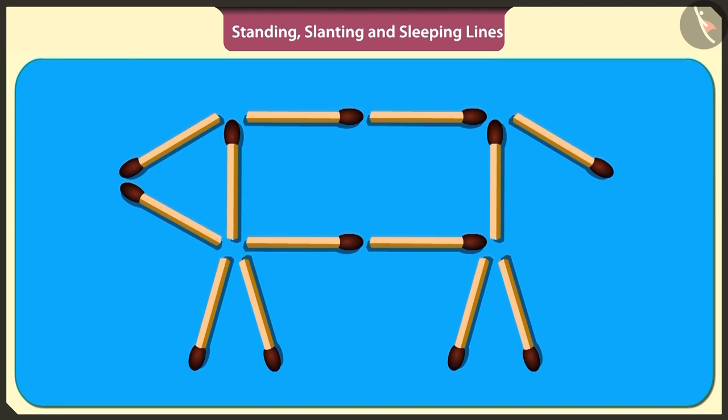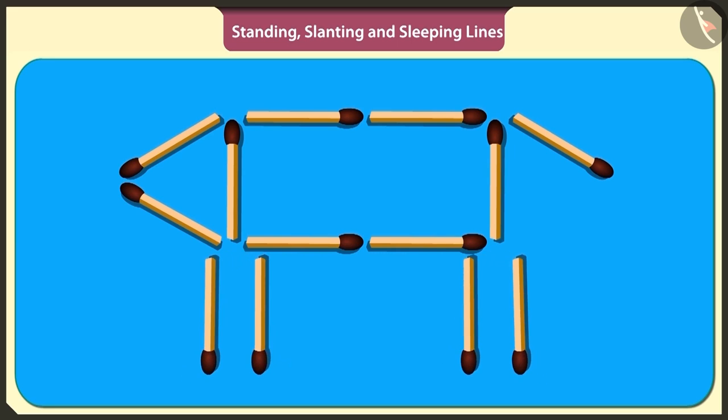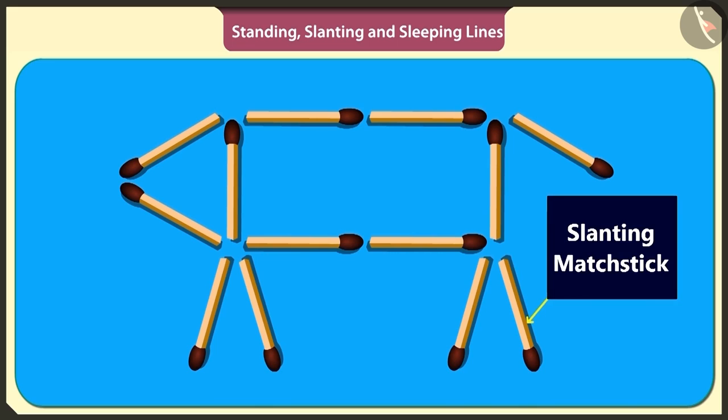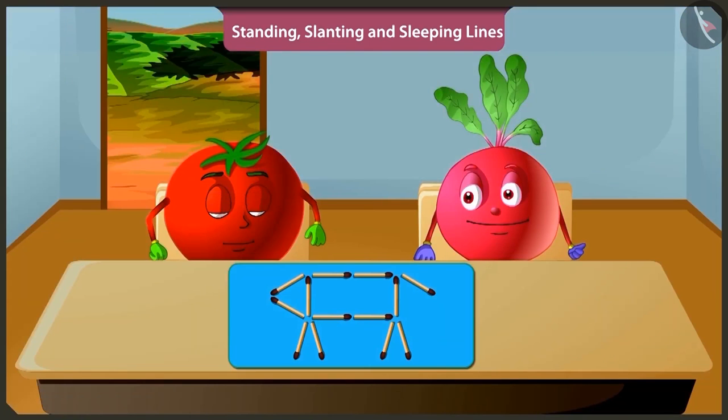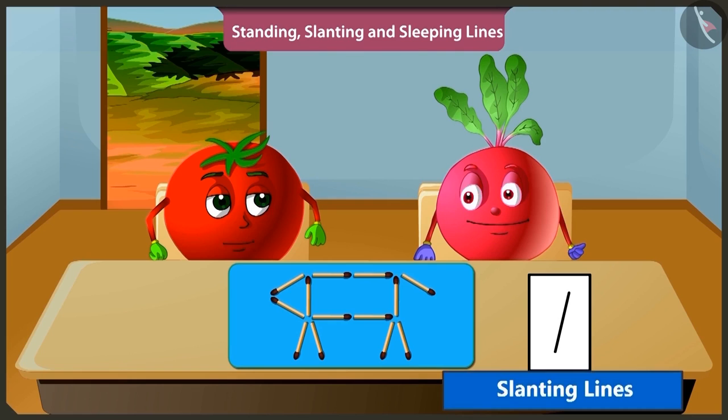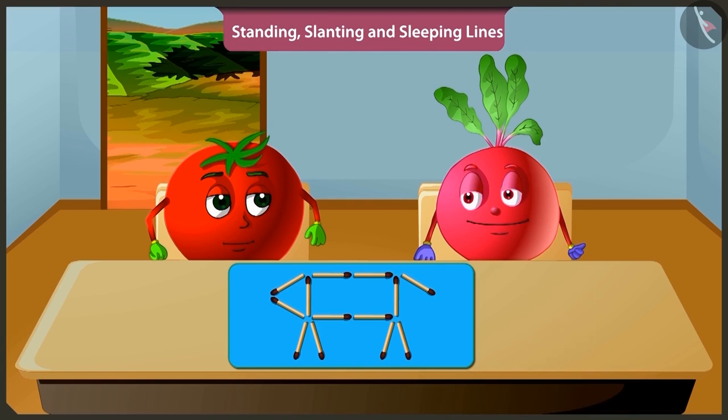Hey, to make the legs of the dog, the matchsticks are not standing but slanting. Hmm, I didn't understand. Pittu, even if the line is slightly oblique, it is called slanting. Yes, understood.